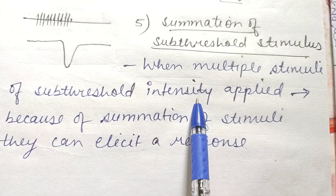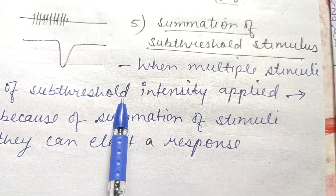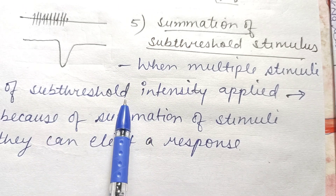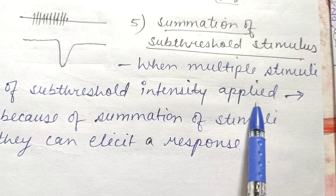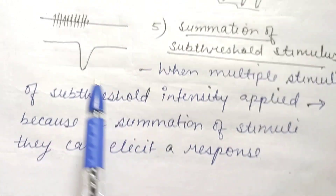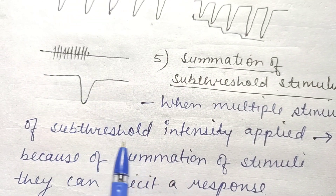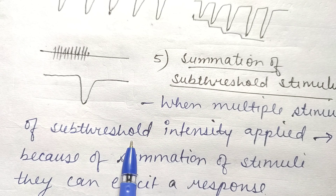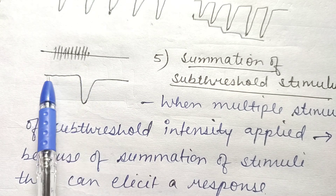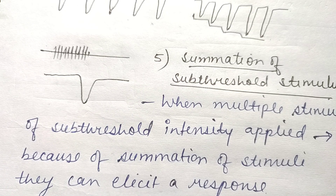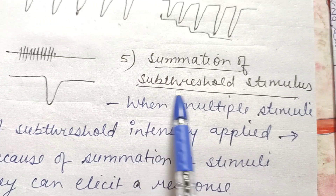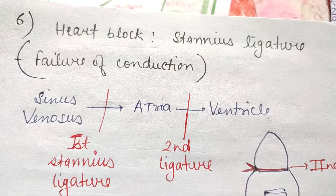The last property is summation of sub-threshold stimuli. When multiple stimuli of sub-threshold intensity are applied — stimuli that are individually not able to elicit any response — if those stimuli are given in large numbers one by one, because of their summation they can elicit a response. Previously they were unable to elicit any response, which is why we call them sub-threshold stimuli, but given in large numbers they summate to make a sufficient stimulus to produce a response. That property is summation of sub-threshold stimuli.